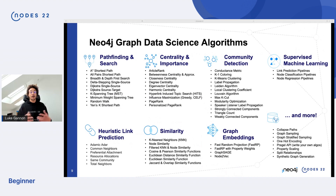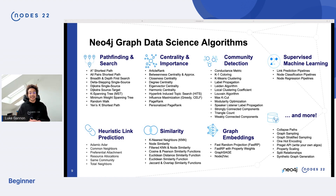Neo4j Graph Data Science has over 70 plus algorithms. Categories include pathfinding and search, centrality and importance, community detection, supervised machine learning, heuristic link prediction, similarity, and graph embeddings. We've also got auxiliary procedures for collapse paths, graph sampling, and one-hot encodings, and we take care of the ETL from the database into in-memory for you.